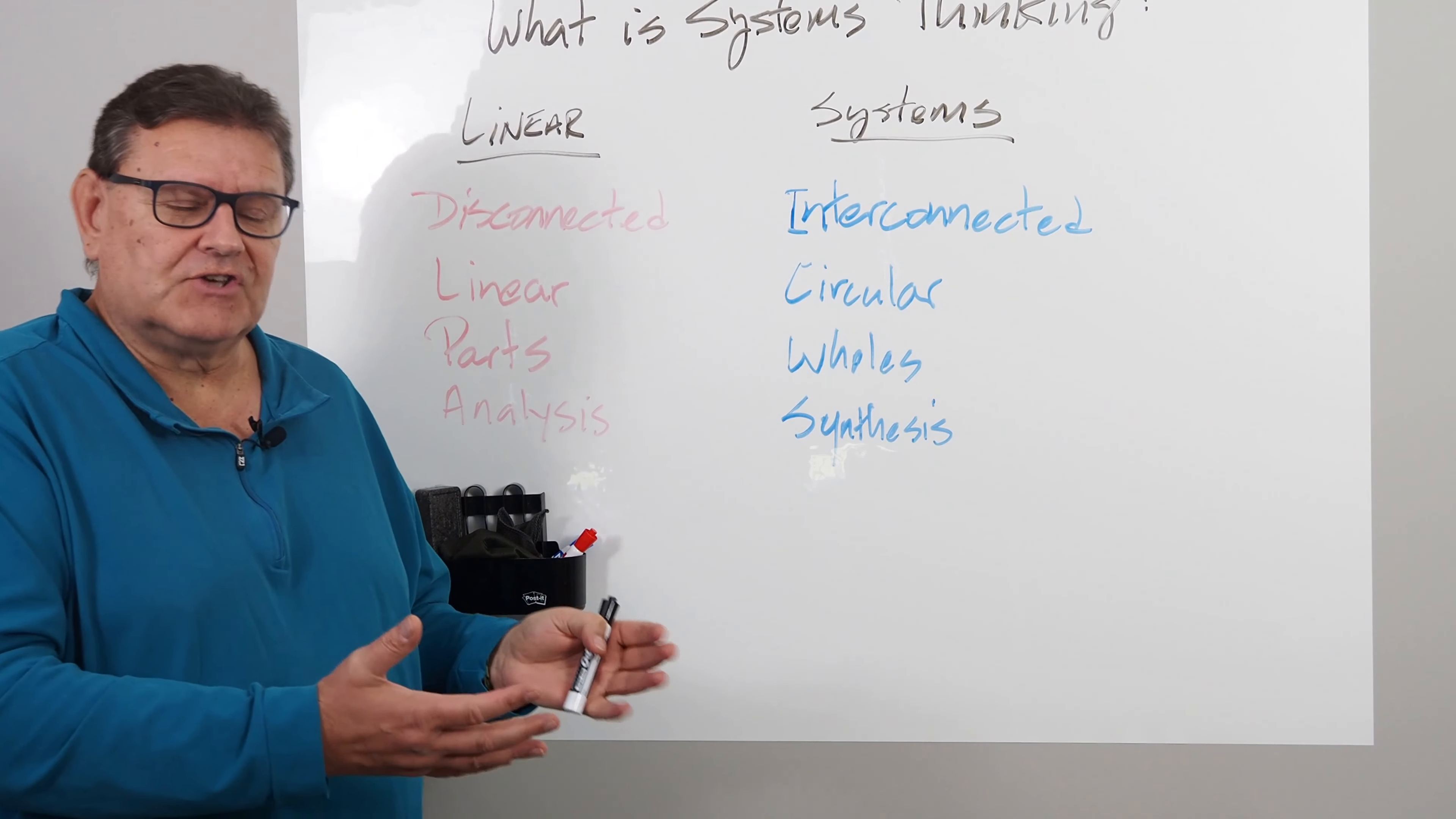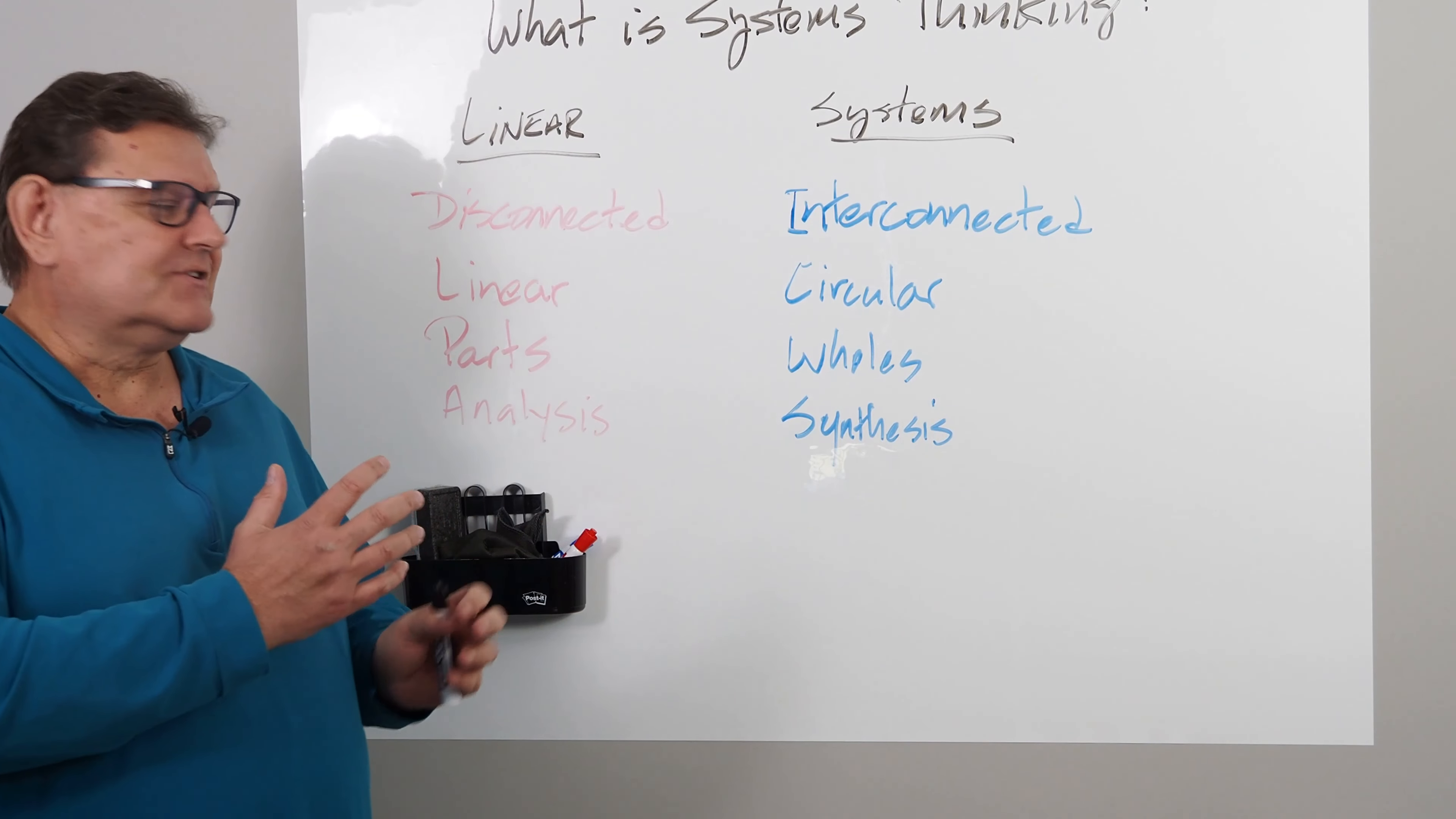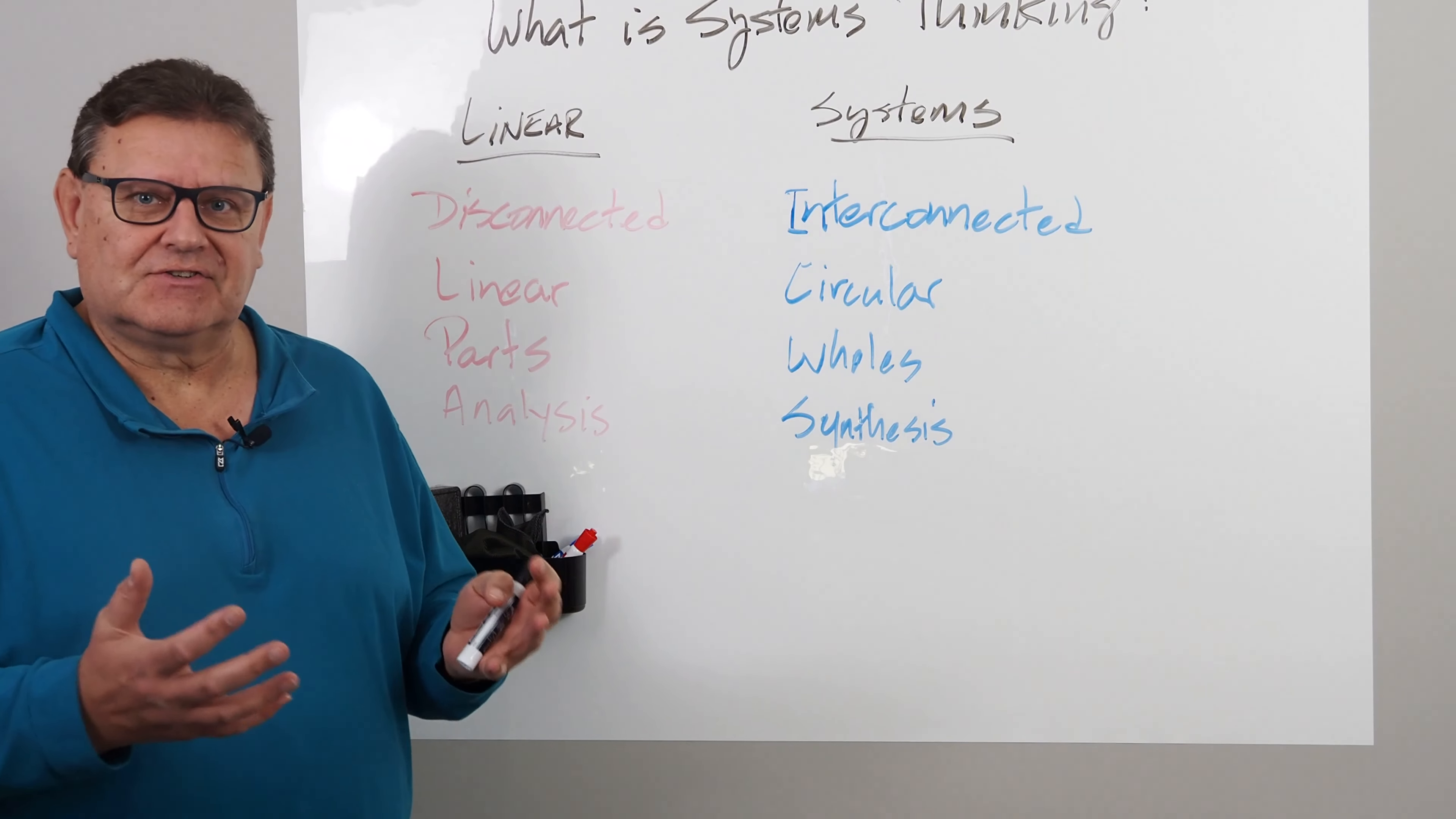So we pull the system apart piece by piece, and we think that by understanding the smallest components, we'll understand the whole. Systems thinking looks at the exact opposite. If you want to understand a system, you have to look at the whole, and you understand the parts and the components in their function in the system, in the whole.